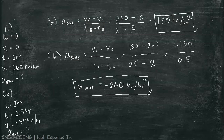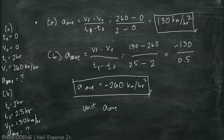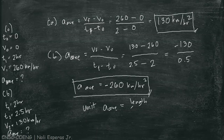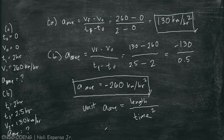Take note of the unit for acceleration, which is length over time squared. While in velocity, the unit is length over time. For displacement, it's just length. And now, for acceleration, we have length over the square of time. For international standard, this is meters per second squared.